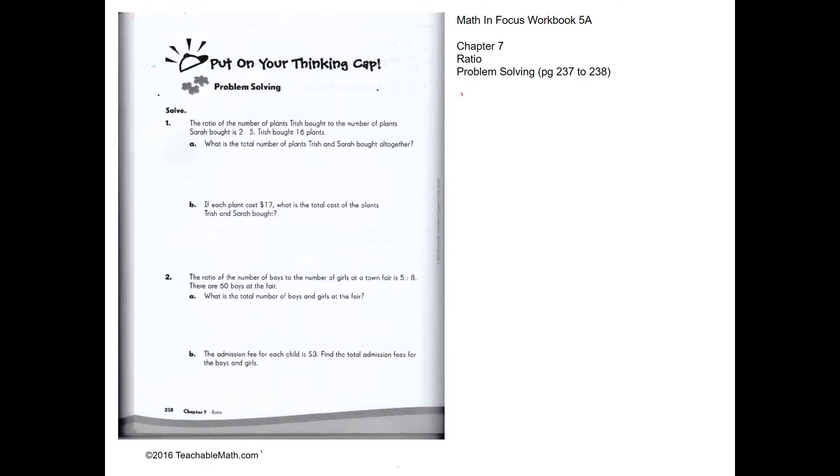Problem solving, Question 1. The ratio of the number of plants that Trish bought to what Sarah bought is 2 is to 5. Trish bought 16. So to find out how many Sarah bought, that would be 5 times 8, which is 40. So the total number of plants that Trish and Sarah bought would be 16 plus 40, which is 56.